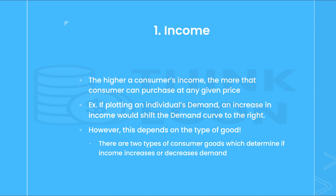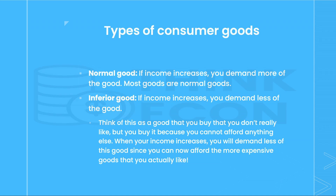Let's start with income. The higher a consumer's income, the more that the consumer can purchase at any given price — we call this an increase in purchasing power. So if we're plotting an individual's demand curve, an increase in income would shift the demand curve to the right, as people can purchase a higher quantity of the good without a change in the actual price. However, this does depend on the type of good. There are two types of consumer goods: normal goods or inferior goods. For a normal good, if income increases, you demand more of the good. Most goods are like this, so most goods are normal goods.